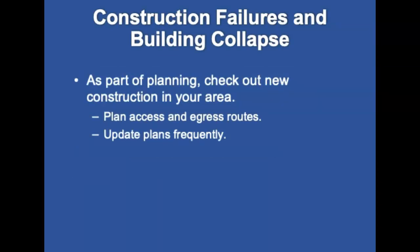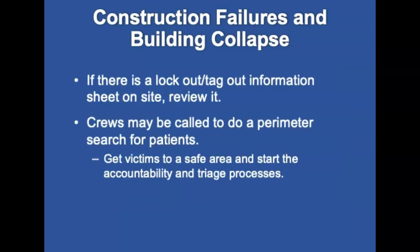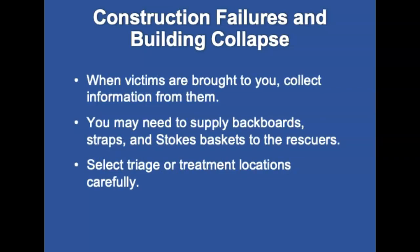For construction failures and building collapse, EMS crews must be ready to handle engineering failures. Check out new construction areas and take note of conditions and placement of equipment such as trains. Update plans frequently. Consider what special PPE might be needed such as helmets, steel-toed boots, eye protection, knee pads, and heavy-duty work gloves. If a lockout/tagout information sheet is on site, review it. During response, crews may be called to do a perimeter search for patients. When victims are brought to you, collect as much information as possible and document on a patient care report or triage tag. Include rescuer names and supply backboard straps or stokes basket to rescuers. The safest area for triaging and treatment should be in the cold zone.